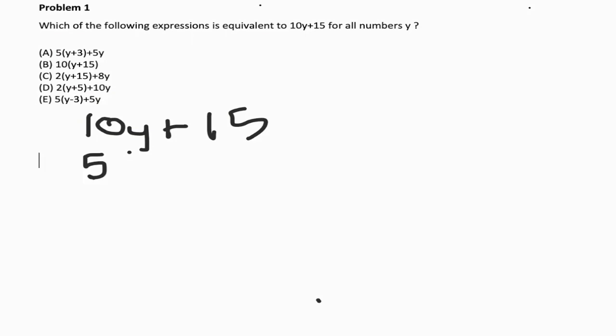Simplify there, we get 5, 10 divided by 5 is 2y, that doesn't change, plus 15 divided by 5 is 3, right? So okay, 5 times 2y plus 3. Well, that is not any of the answer choices exactly as is. But if we look at the answer choices, there's one of them that is equivalent to this.